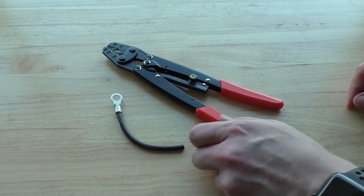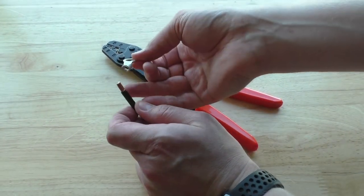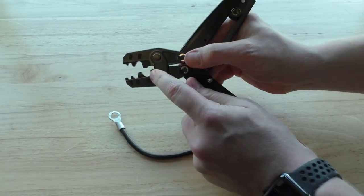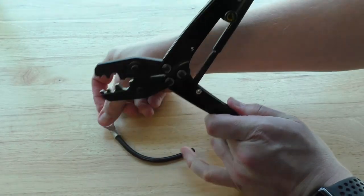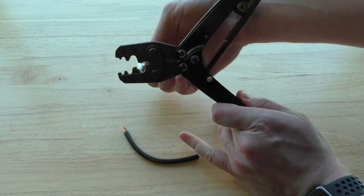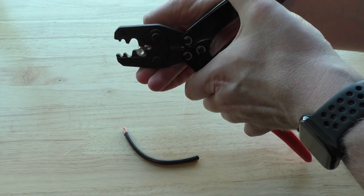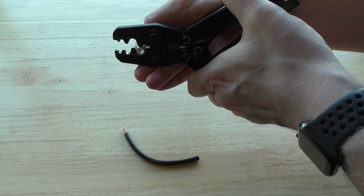And lastly we have our RMB 14-8 6-gauge non-insulated ring terminal. Now, because of the larger size of these terminals, you may find it easier to get them secure in the tool before adding the wire. You just load it in there, squeeze down on the handle just a bit to get it secured.